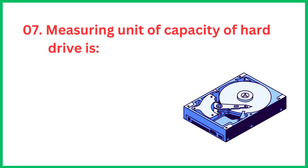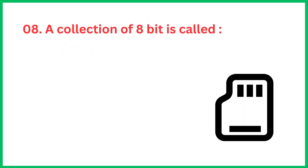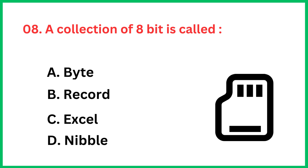The measuring unit of capacity of a hard drive is — the correct answer is option B: GB. A collection of 8 bits is called — the correct answer is option A: a byte.